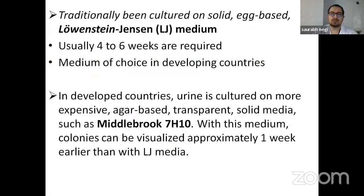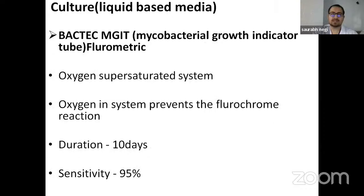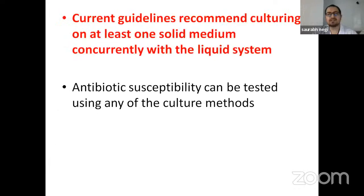Culture media: there are two types of solid culture media. One is Lowenstein-Jensen medium, which takes four to six weeks and is the medium of choice in developing countries. Another is the solid agar-based Middlebrook 7H10 medium, which can colonize bacteria one week earlier and is used in developed countries. Liquid-based culture media, the BACTEC system, uses an oxygen super-saturated system; oxygen prevents the fluorescence reaction. It takes 10 days with a sensitivity of 95%. Current guidelines recommend culturing at least one solid medium concurrently with the liquid system. Antibiotic susceptibility can be tested using any of the culture methods.